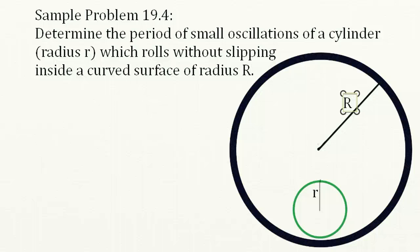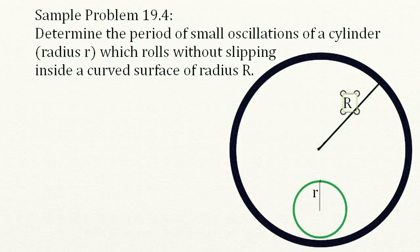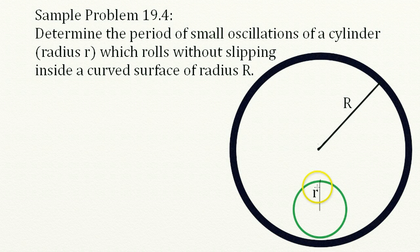Let's look at a sample problem. This is sample problem 19.4 from the book, Vector Mechanics for Engineers, Statics and Dynamics, 9th edition, Beer and Johnston. The problem is this: determine the period of small oscillations of a cylinder with radius small r, which rolls without slipping inside the curved surface of radius large R.